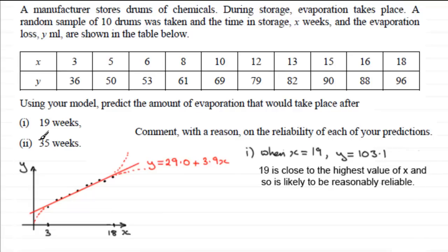But when we take x equals 35 let's just see what that works out to be. So for part 2 when x equals 35 if you substitute 35 into here and work out what y is it turns out to be 165.5.